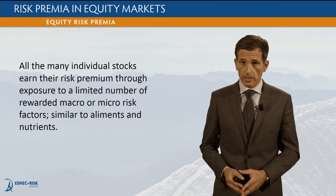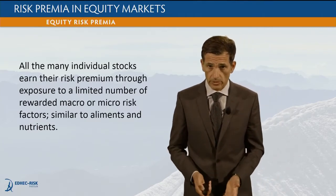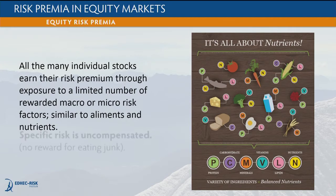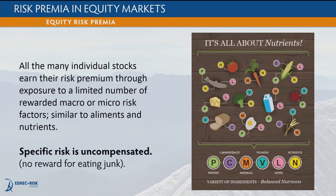One way to think about it is to think about elements versus nutrients. When we think about food, it's all about nutrients. The kind of food that we eat doesn't matter too much as long as it allows us to get access to the right underlying nutrients — vitamins, minerals, lipids, carbohydrates, and so on. That's exactly the same for stock markets. What matters is systematic factor exposure. Specific risk is uncompensated. There is no reward for eating junk.